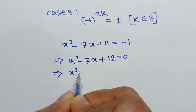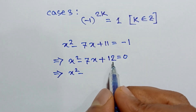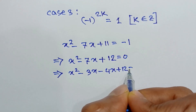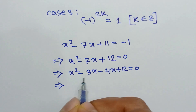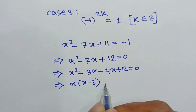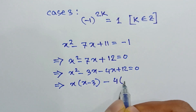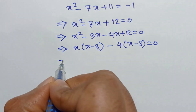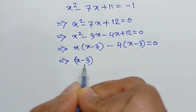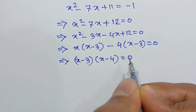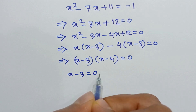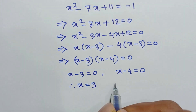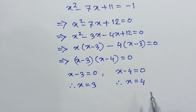Since 12 = 3×4 and 3 + 4 = 7, we write x² - 3x - 4x + 12 = 0. Taking x common from the first two terms: x(x - 3) - 4(x - 3) = 0, giving (x - 3)(x - 4) = 0. So x - 3 = 0 or x - 4 = 0, which means x = 3 or x = 4.